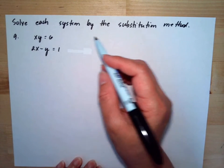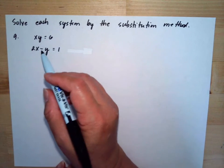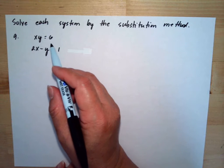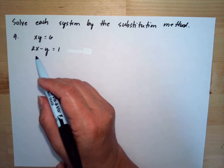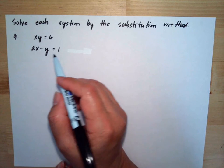Solve this system by the substitution method. So we have number 9: x times y is equal to 6, and 2x minus y is equal to 1.